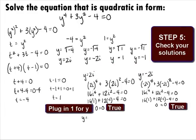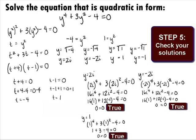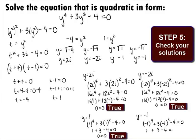Now let's check y equals 1 by plugging 1 in for y into the original equation: 1 to the 4th power plus 3 times 1 squared minus 4 equals 0, which simplifies to 1 plus 3 minus 4 equals 0, giving us 0 equals 0. Since this is a true statement, y equals 1 is also a solution. Last, let's check negative 1: negative 1 to the 4th power plus 3 times negative 1 squared minus 4 equals 0, which simplifies to 1 plus 3 minus 4 equals 0, giving us 0 equals 0. So y equals negative 1 is also a solution.